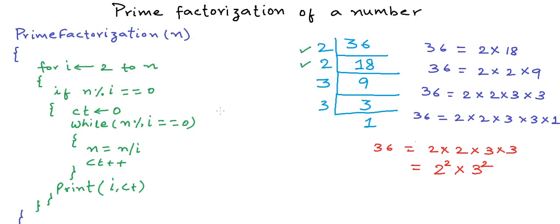One obvious question here is: how can we be sure we will get only prime factors? We are running the loop for all values of i till n, so we may encounter non-prime values as well. Well, we will never get a non-prime value because a non-prime number will never satisfy the divisibility condition — it will never divide n. We can prove this using contradiction.